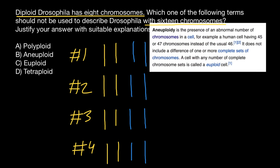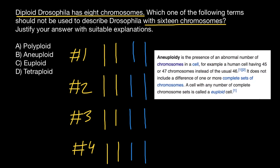Here I want to show you a citation from Wikipedia to clear all doubts. Aneuploidy is the presence of an abnormal number of chromosomes in a cell — for example, a human cell having 45 or 47 chromosomes instead of the usual 46. It does not include differences of one or more complete sets of chromosomes. A cell with a number of complete chromosome sets is called a euploid cell. So even a tetraploid organism, though it has a non-standard number of chromosomes, is still euploid.